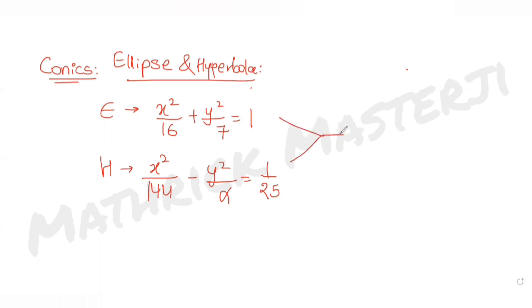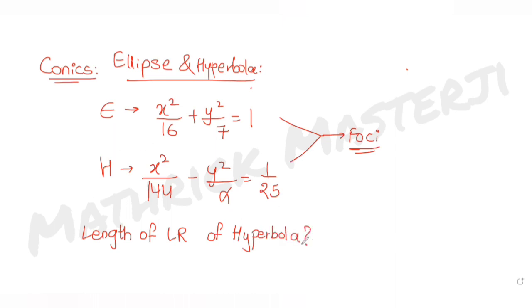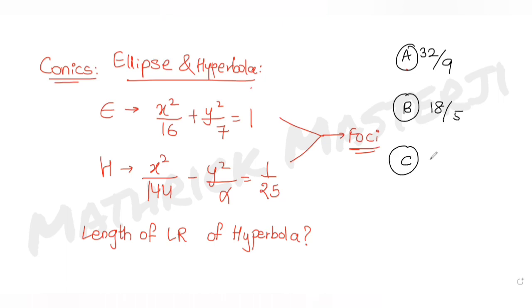We are told that the foci of the two figures coincide with each other. The question asks us to find the length of the latus rectum of the hyperbola. The answer choices are: 32 over 9, 18 over 5, 27 over 4, and 27 over 10.